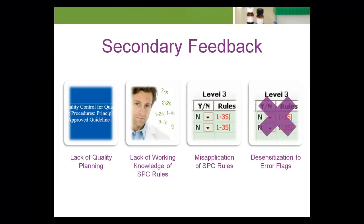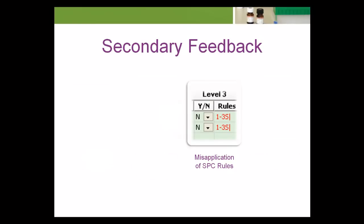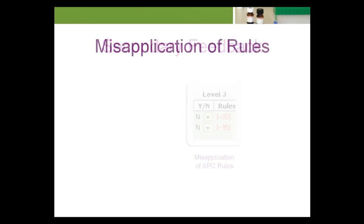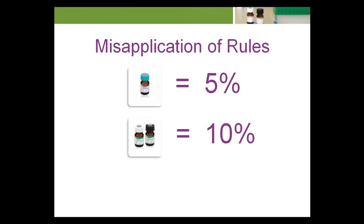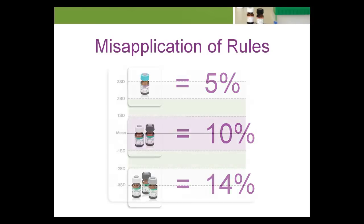Regardless of the analytical capabilities of a test, some laboratories will continue to use only a 1-2-S rule as a rejection limit. According to Dr. Westgard, failure to allow for valid points between 2-SD and 3-SD may result in falsely rejecting 5% of analytical runs when using one level of control, 10% of analytical runs when using two levels of control, and 14% of analytical runs when using three levels of control.